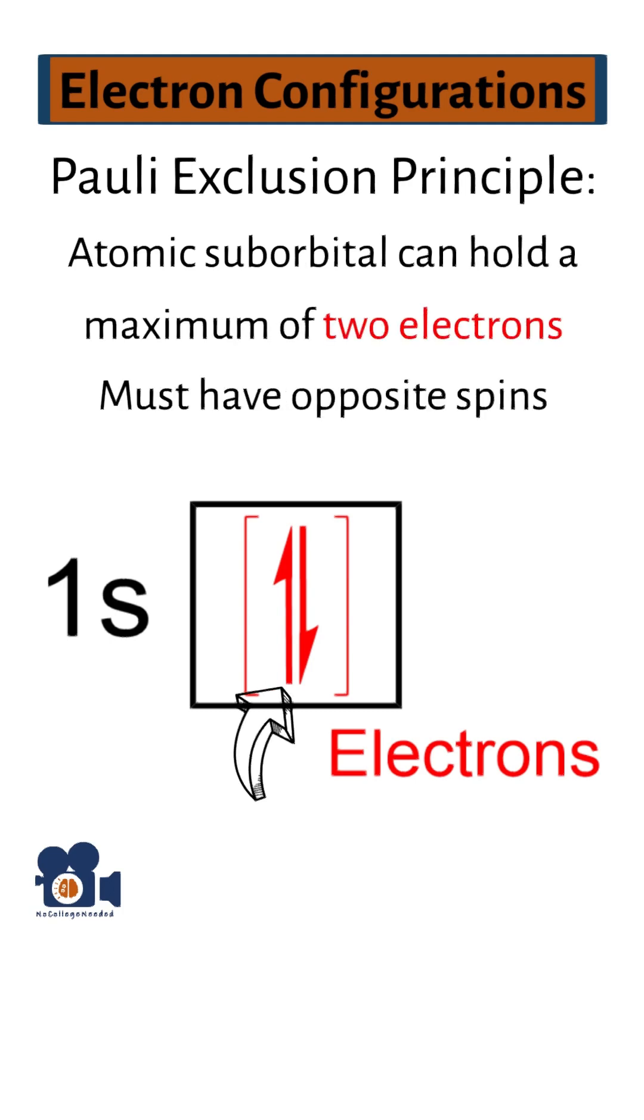The electron configurations are visualized by half arrows representing one electron each pointing in the opposite direction with a box around them representing the specific suborbital.